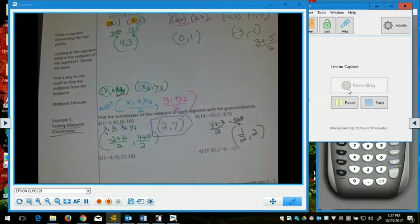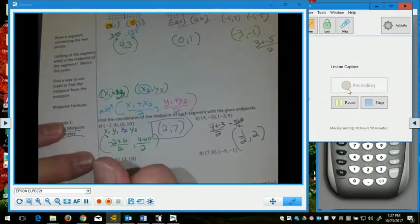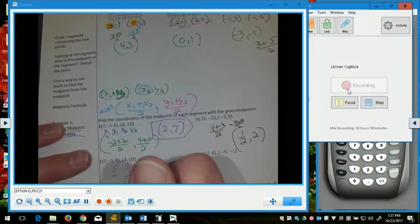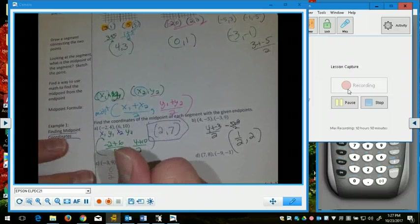For letter C, negative 3 plus 3 is 0 over 2 is 0, and 9 plus 10 over 2 is 19 over 2 is 9.5.